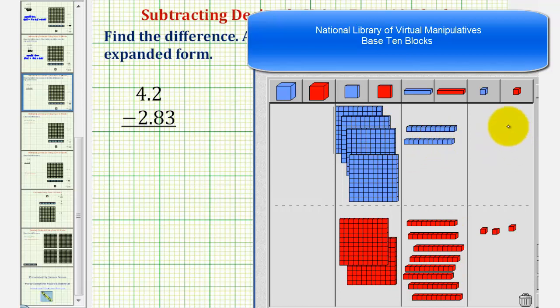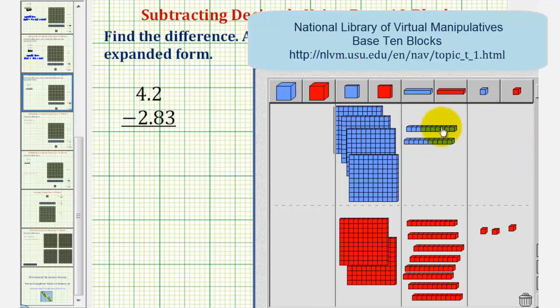So starting at the hundredths place value, or at the bits, we want to remove three bits from our four flats and two longs. Notice how we don't have any bits here to remove, so we'll have to perform an exchange. We'll exchange one long for ten bits.